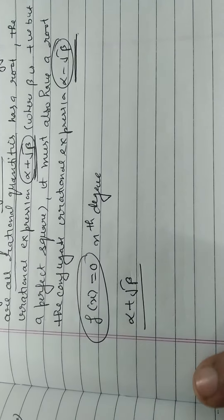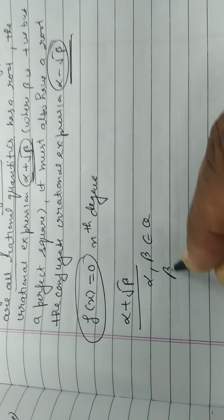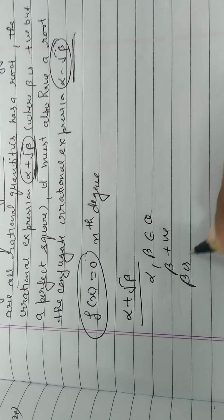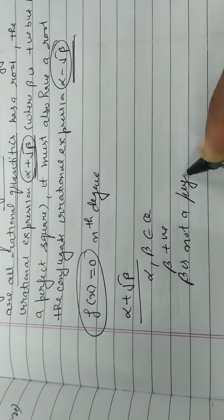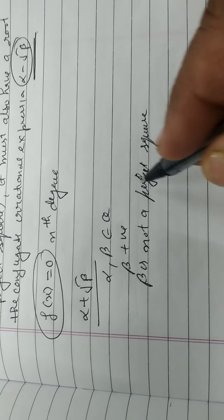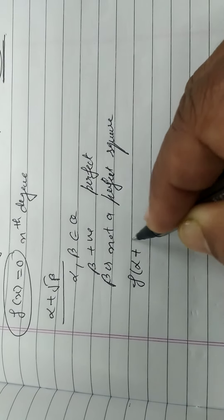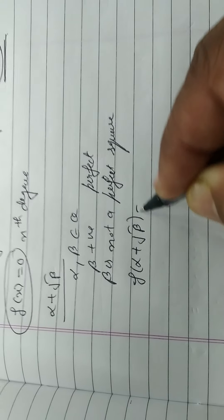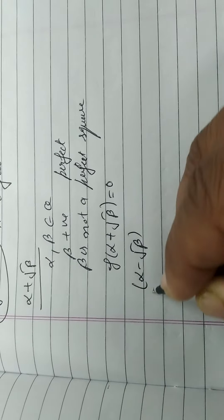यहाँ α और β दोनों rational हैं। β positive है और β is not a perfect square. तो ये सारी conditions हैं। यदि α + √β root है तो यह equation को satisfy करेगा। हमें prove करना है कि α - √β भी root होगा — यही हमारा question है।